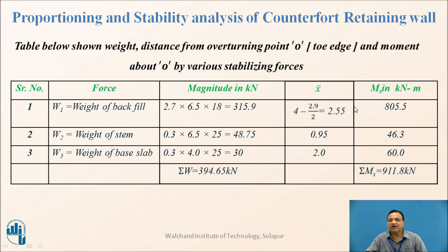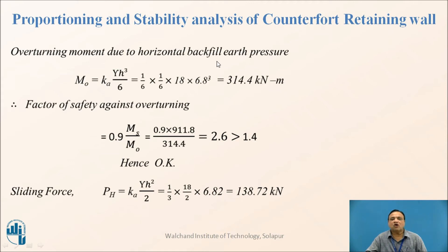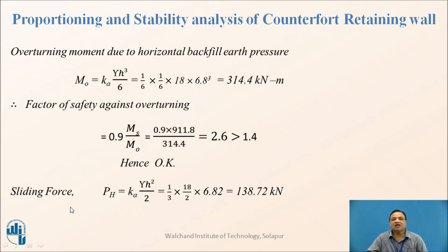Multiplying each weight by its distance gives the stabilizing moment; the sum of all is the total stabilizing moment Ms. The overturning moment due to horizontal earth pressure is Mo = Ka × γ × H³/6 = (1/3) × (1/6) × 18 × 6.8³ = 314.4 kN·m. Factor of safety against overturning = 0.9 × Ms / Mo = 2.6, which is greater than the required 1.4 as per IS 456:2000. Hence it is okay.